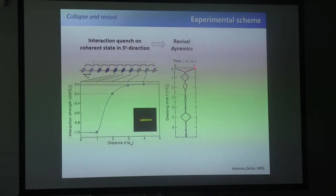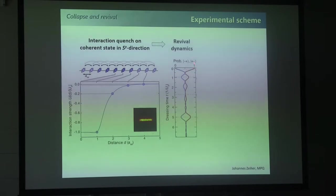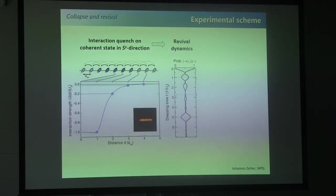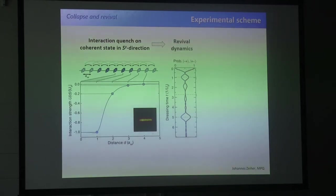What is shown here is the probability averaged over the chain for a single atom to be pointing in the initial direction. Initially you point perfectly in the initial direction, then you dephase, and then you see revivals. Then it dephases completely for some time, and then after a longer time you see a revival again in the initial direction. The revival is not perfect — it's not a full revival in the sense that all frequencies have come back to rephase completely — but part of them has. The question is how can you detect this.